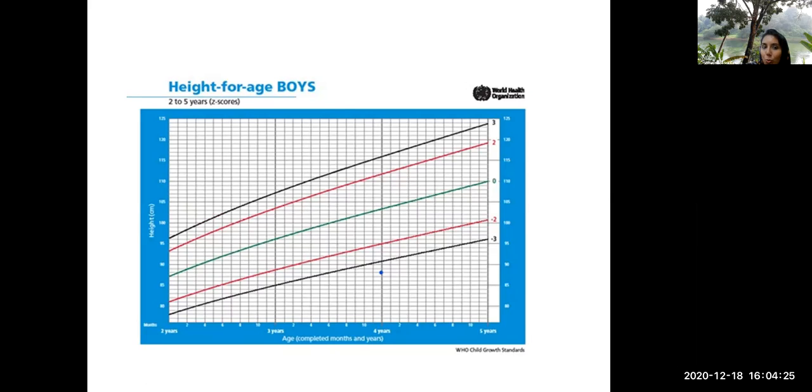Now we need to calculate the MPH. So the MPH in boys, there is a difference between MPH in boys and girls. In boys, we add 6.5 centimeters, whereas in girls we minus 6.5 centimeters. So when anybody is asking you the formula for mid-parental height, you should say father's height plus mother's height divided by two plus 6.5 centimeters for boys or minus 6.5 centimeters for girls. The difference is 13 centimeters is the average difference in height between adult men and adult women according to Indian standards. That's why we are using that.